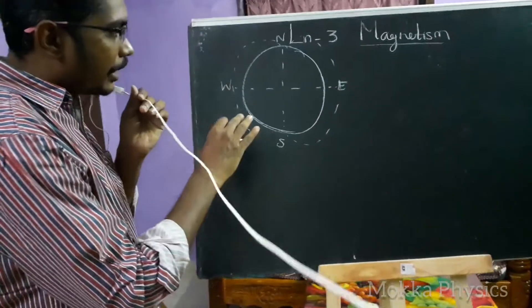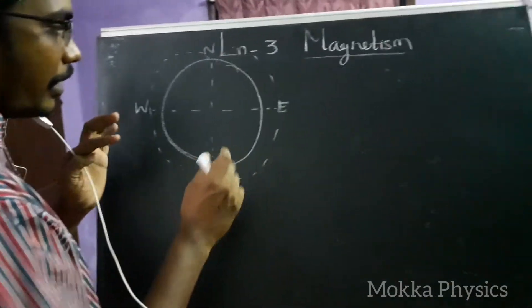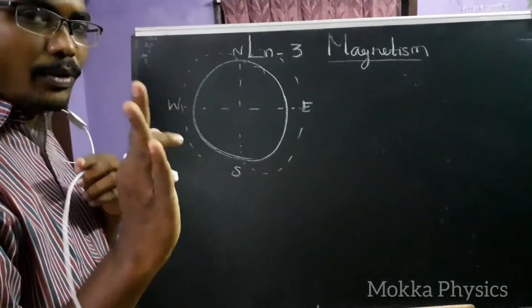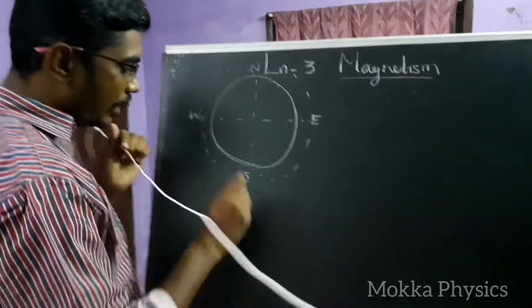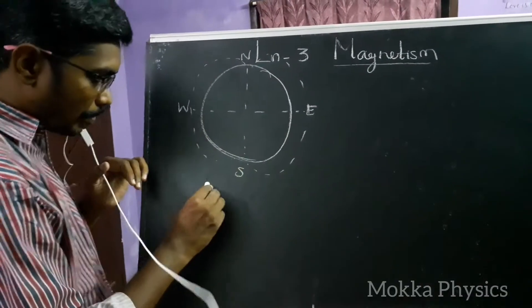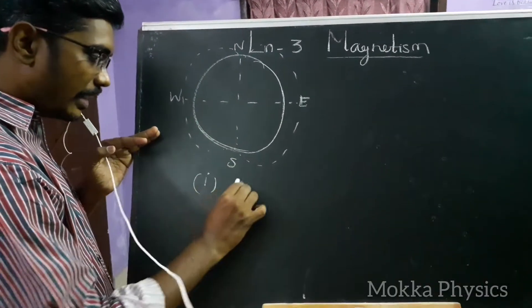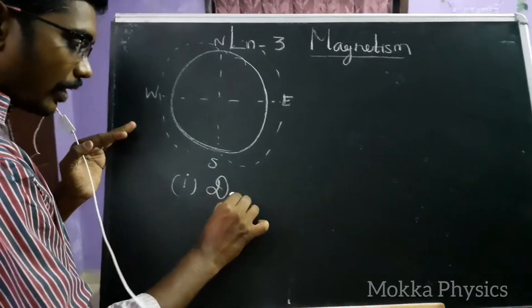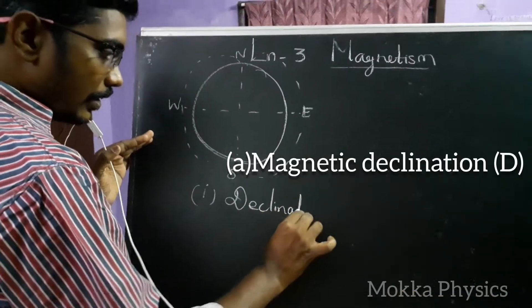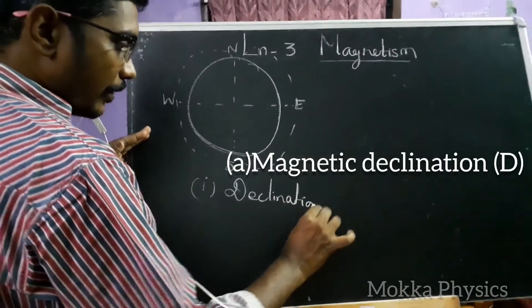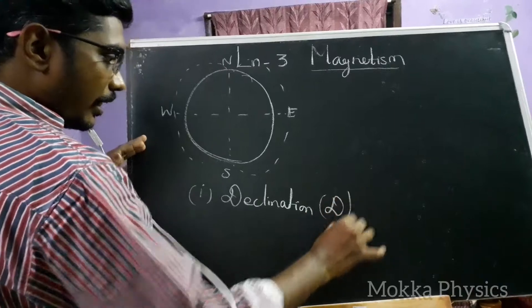We are going to study the earth's magnetism. There are three important factors. The first one is Declination.